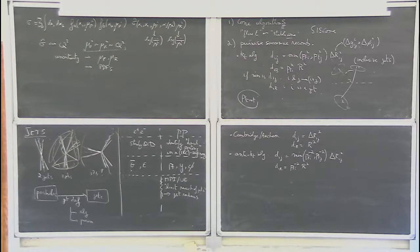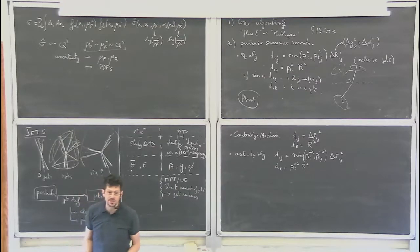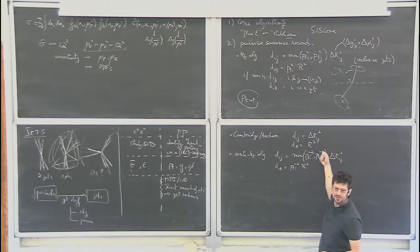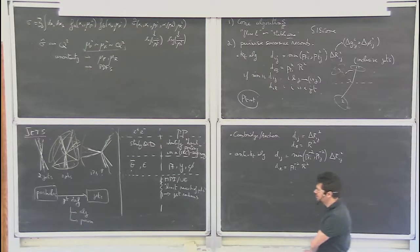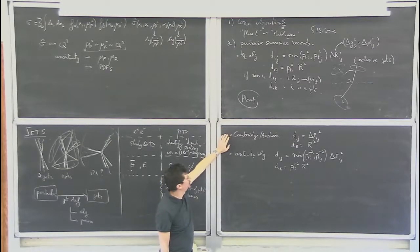Anti-KT is the one used at the LHC now — 99% of standard jet clustering at the LHC is done with the anti-KT algorithm. A small fraction uses Cambridge, mostly for jet substructure studies because Cambridge is ordered by angles. Some more specialized jet substructure studies can use KT or other generalized versions. The main thing to remember is that anti-KT is the standard, with Cambridge and KT as alternatives used in specific contexts.